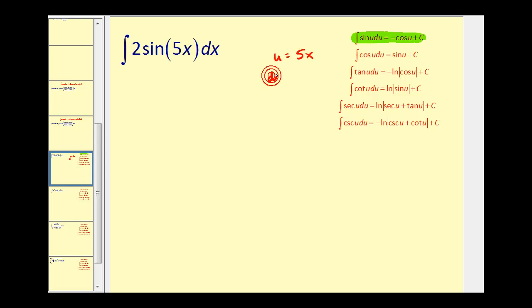So differential u is going to be equal to 5 dx. Now there's not a 5 in the integrand, so what I'm going to do is solve this for dx. If I divide both sides by 5, we can say that (1/5) du = dx.